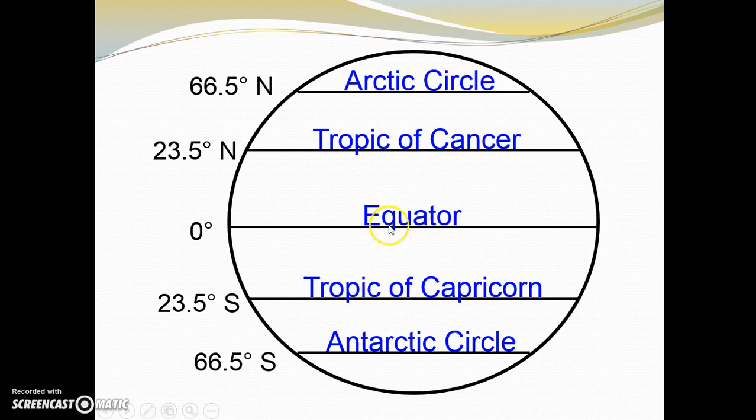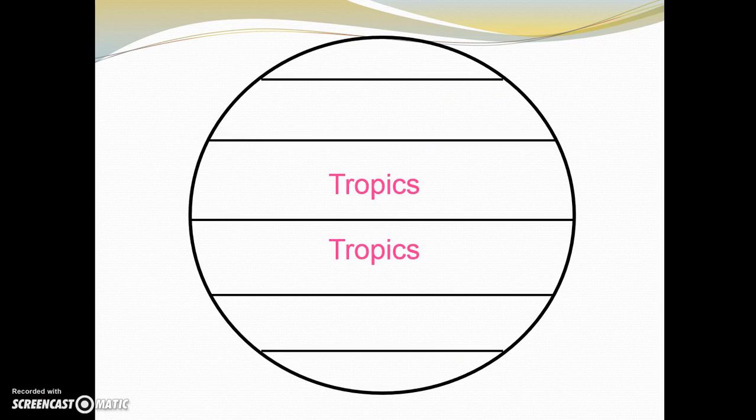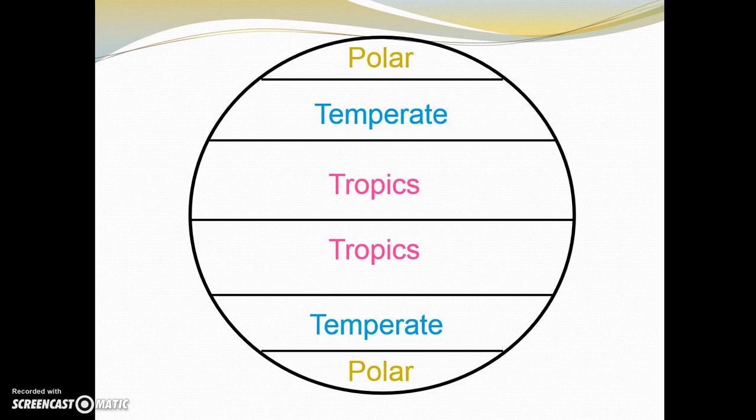The equator is at zero degrees, and the closer something is to the equator, the warmer it gets. As you move out, you have the Tropic of Cancer at 23.5 degrees north and the Tropic of Capricorn at 23.5 degrees south. Anything that falls between the Tropic of Cancer and Tropic of Capricorn is going to have a tropical climate. Then you have the Arctic Circle at 66.5 degrees north and 66.5 degrees south. Anything that falls above or below the Arctic Circle is going to have a polar climate. So, tropics, then we have temperate and polar. Between the Arctic Circle and the tropics you have temperate, and then above the Arctic Circle you have polar climate zones.